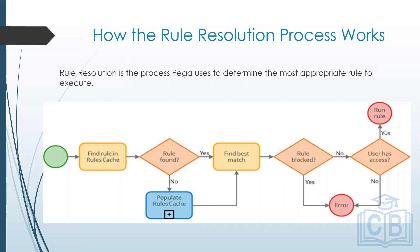But what if the rule is not found in the rules cache at all? Then the system populates the rules cache first, and then starts checking again. This continues until the best match is formed.